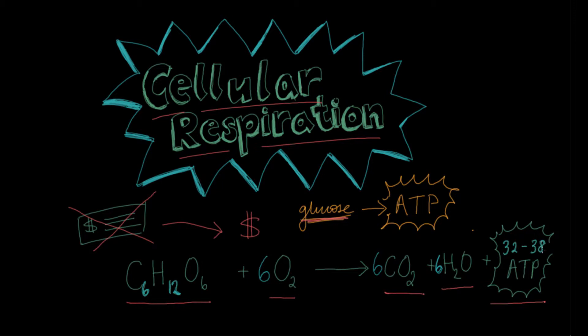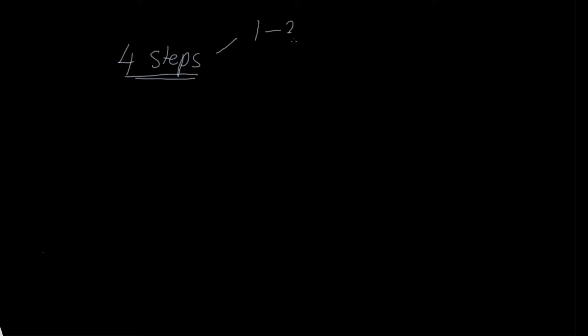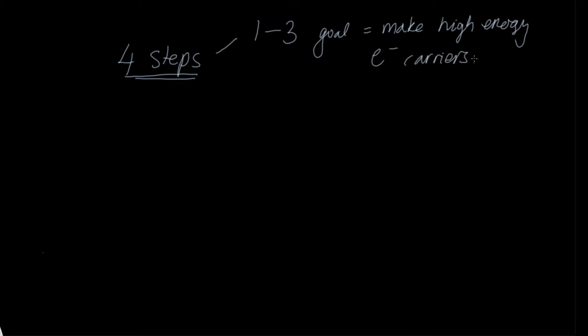The reason ATP yield is a range is that cellular respiration uses a little ATP to make a lot of ATP, and efficiency can vary depending on which cells it occurs in. Now let's look at the four steps of cellular respiration. For steps one through three, the goal is to make high-energy electron carriers, which are then used in the fourth step to make the majority of ATP.